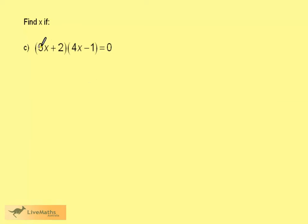We now have 3x plus 2 in a bracket, multiplied by 4x minus 1 in a bracket, is equal to 0. Either this first bracket will be 0, which means 3x plus 2 is equal to 0. Or the second bracket will be 0, meaning 4x minus 1 is equal to 0.